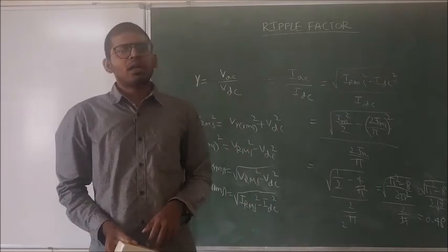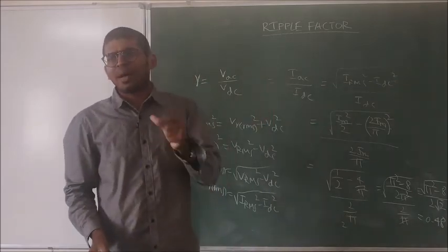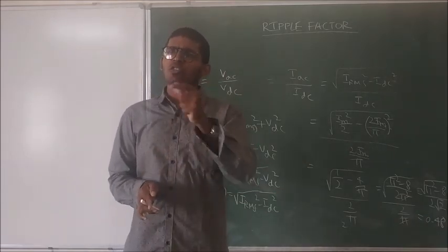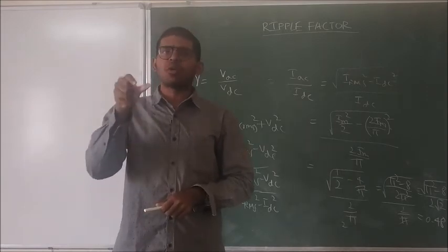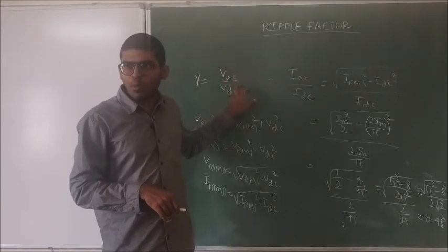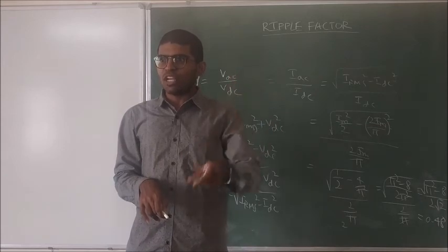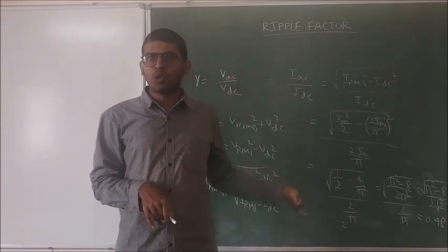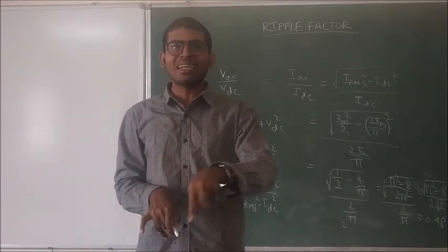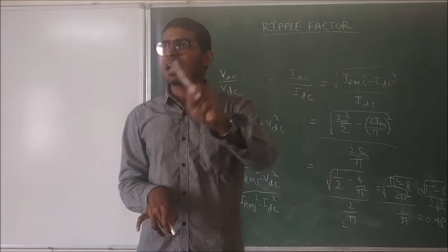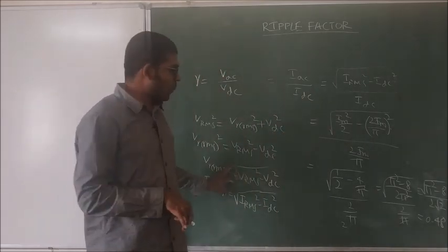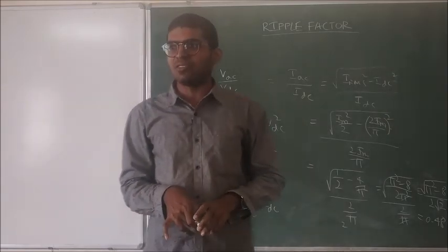So 1.21 is greater than 0.48. The ripple factor value of the full wave rectifier is much lesser than that of the half wave rectifier. This tells us the output of the full wave rectifier has a higher DC component compared to the half wave rectifier. To summarize, ripple factor is defined as the ratio of the AC component to the DC component. It can be expressed as VAC by VDC or IAC by IDC, where the AC ripple RMS value equals the square root of (V_RMS squared minus V_DC squared).